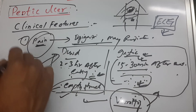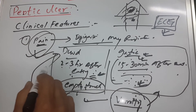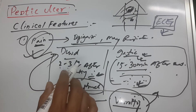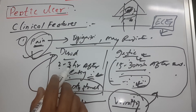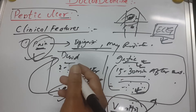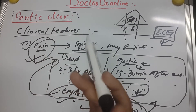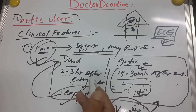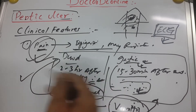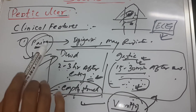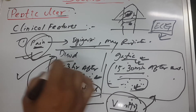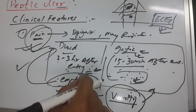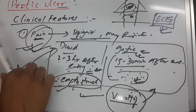Other common symptoms of peptic ulcer include nausea, vomiting, dyspepsia, heartburn, chest discomfort, anorexia, hematemesis, and melena. These are all common symptoms, but what you need to remember most specifically is the pain pattern — differentiating duodenal from gastric ulcer is the most important clinical feature.